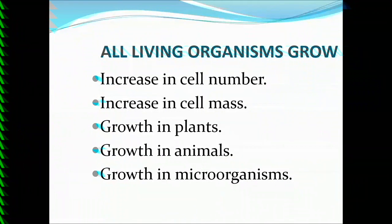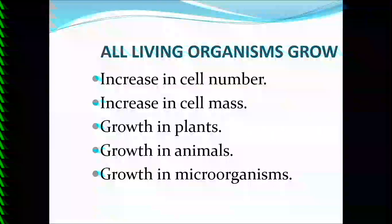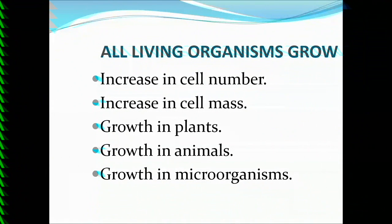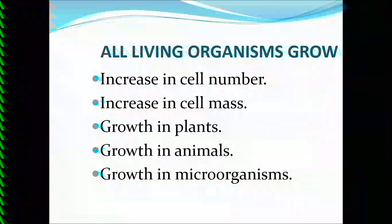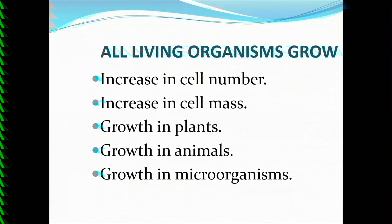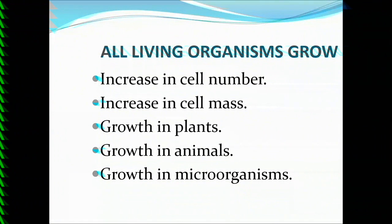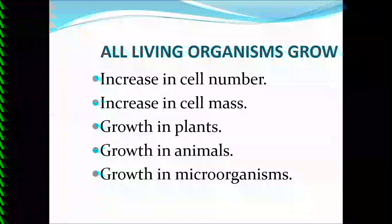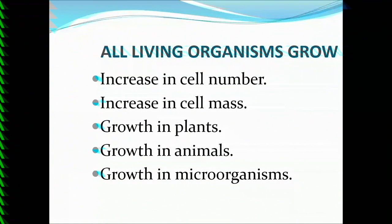In case of growth in plants, there are specific regions known as meristematic regions, which have actively dividing cells. Because of these actively dividing cells, growth is continuous and occurs throughout life. So in case of plants, there is an open type of growth. In case of animals, growth is only up to a certain age. In plants, growth is continuous throughout life because of the meristematic cells, whereas in animals growth stops after a certain age.